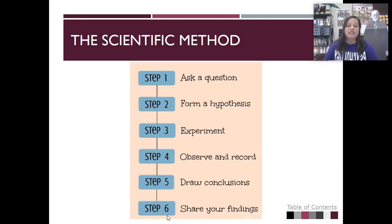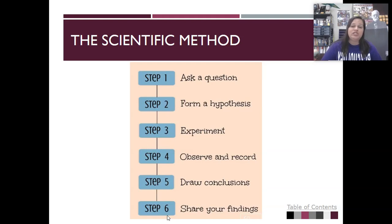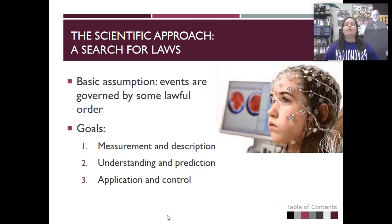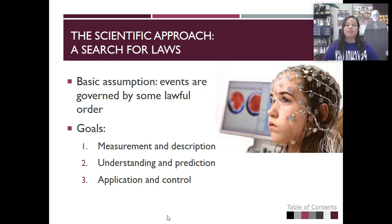In psychology, we do use a scientific method. I'm not going to go in-depth on this, because I'm pretty sure every science class you've ever had has gone in-depth. But same steps: asking a question, forming a hypothesis, experiment, observe and record, draw conclusion, and sharing your findings. The scientific approach believes that events, including behaviors, are governed by some lawful order. Our goals are to measure, describe, understand, predict, and then ultimately to try to apply and control.